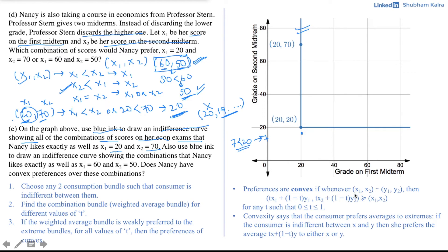Preferences are convex if whenever bundle (x1, x2) is indifferent to bundle (y1, y2), the weighted average bundle (tx1 + (1−t)y1, tx2 + (1−t)y2) is weakly preferred to (x1, x2) for any t in [0, 1]. In simple terms, convexity means the consumer prefers averages to extremes. This complex definition can be broken down into three simple steps.